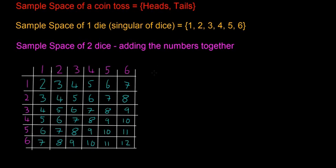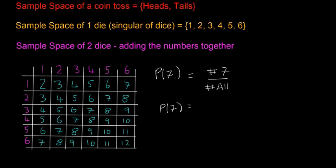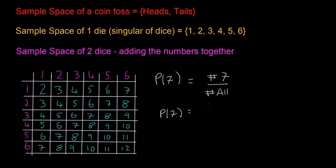So the first example we're going to look at is calculating the probability of getting a 7 when you roll two dice. The probability of 7 is equal to the number of 7s divided by the total number of outcomes. This would be pretty hard to figure out if you didn't have a sample space because you'd have to count up in your head all the different ways of getting a 7. This is just a much easier way of doing it. So P of 7 is equal to the number of 7s, which is 6, divided by 36 — there are 36 different possibilities.